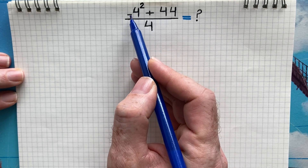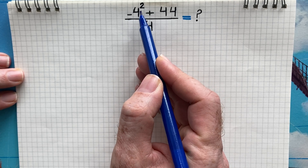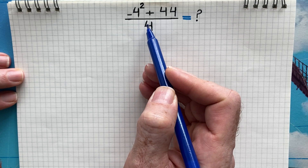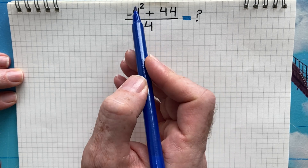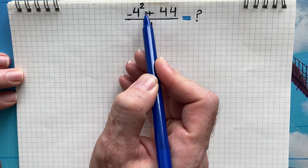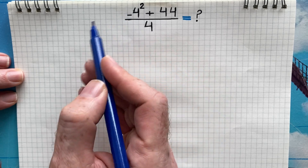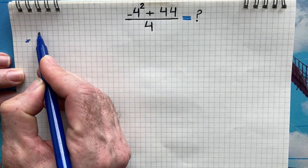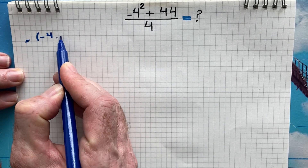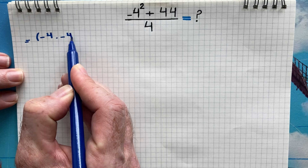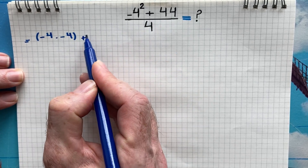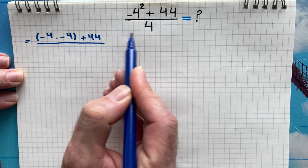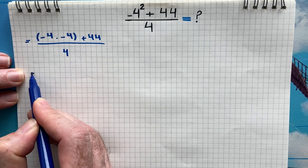We are going to find the value of negative 4 squared plus 44 over 4. I'm going to start with the first term, negative 4 squared, which can be written in the form of negative 4 times negative 4, next plus 44 over 4.